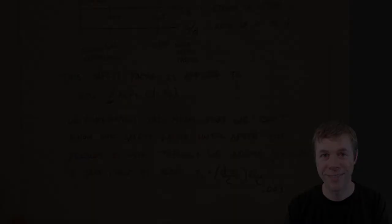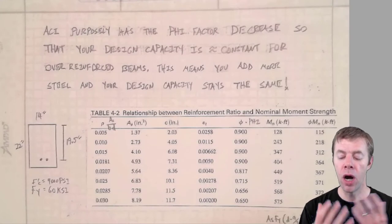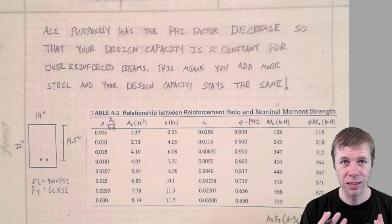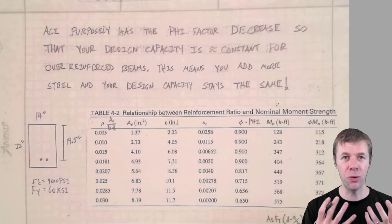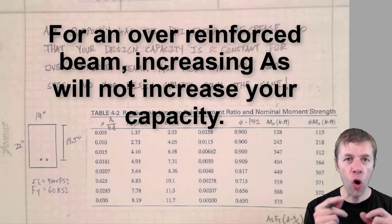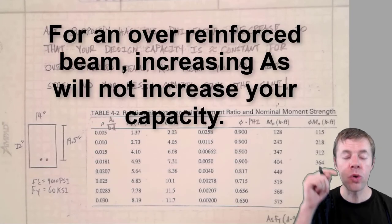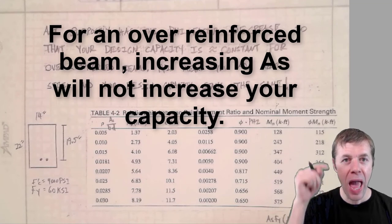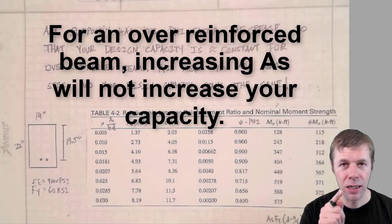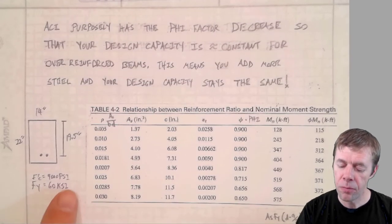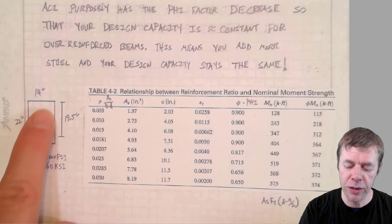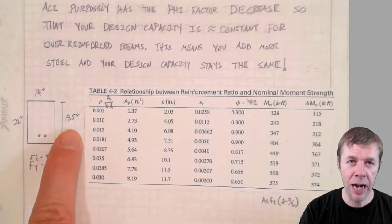But we're gonna do something else first. So ACI is going to purposely have the fee factor decrease so your design capacity is actually constant for reinforced concrete beams. That's how they penalize you. This means that you can add more and more steel, and it doesn't matter. I'll say that again. If you have an over-reinforced beam, you can keep adding steel to that beam, and your capacity of your cross-section will not increase. What? Here is what I'm talking about in a table.